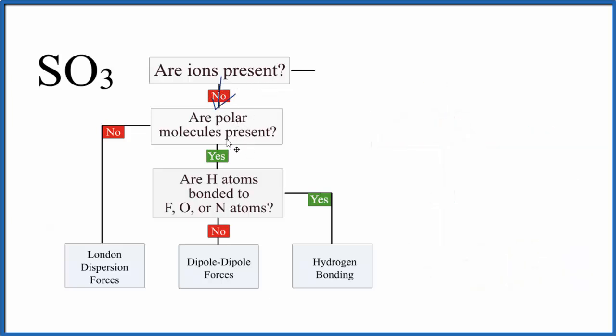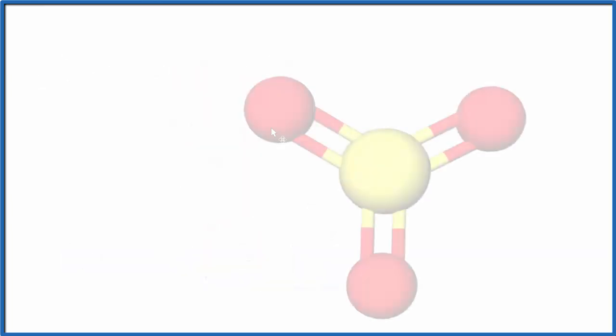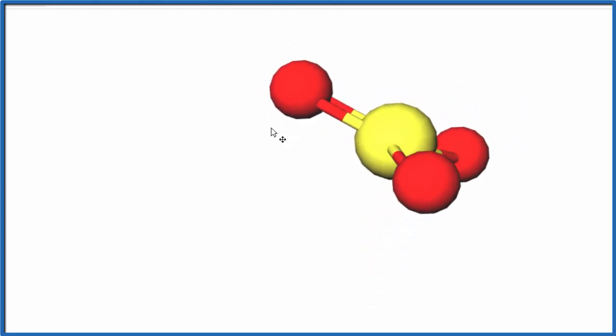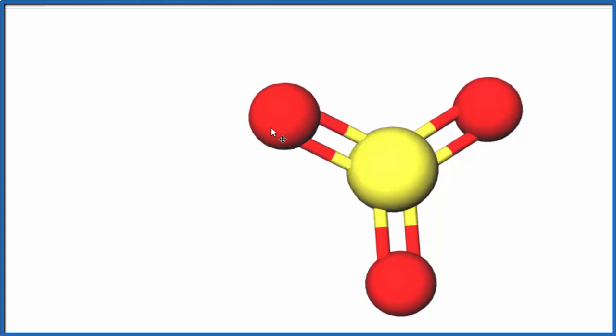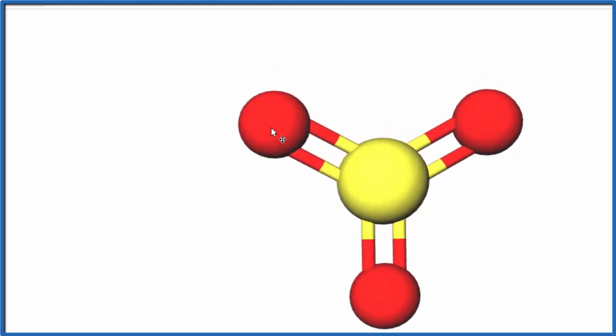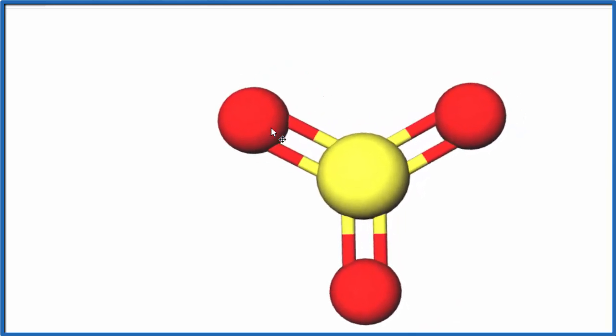And that asks, do we have a polar molecule? Is there a positive and negative side of the molecule that would cause it to attract other molecules? If we look at SO3, if we look at the molecular geometry, we can see that SO3 is trigonal planar. So it's in a plane here, and each one of these oxygen atoms is pointing in opposite directions. So because of that, it's symmetrical. We don't have a dipole. So this is a nonpolar molecule.